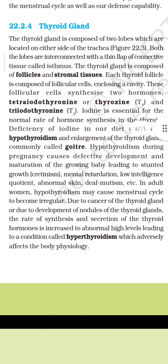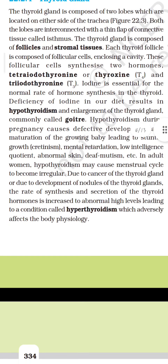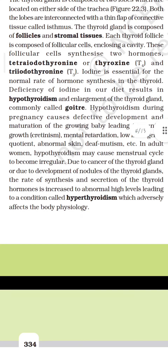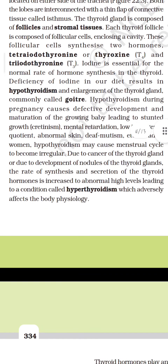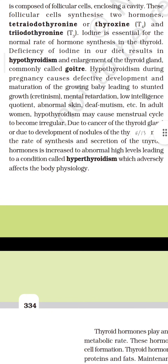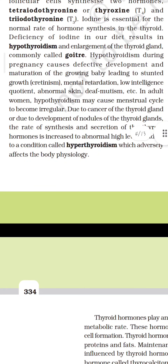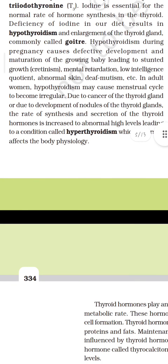The thyroid gland is composed of two lobes located on either side of the trachea, interconnected with a thin flap of connective tissue called the isthmus. The thyroid gland is composed of follicles and stromal tissues. Each thyroid follicle is composed of follicular cells enclosing a cavity. These follicular cells synthesize two hormones: tetraiodothyronine or thyroxine (T4) and triiodothyronine (T3). Iodine is essential for the normal rate of hormone synthesis in the thyroid. Deficiency of iodine in the diet results in hypothyroidism and enlargement of the thyroid gland, commonly called goitre.